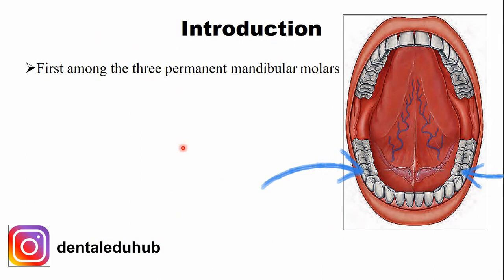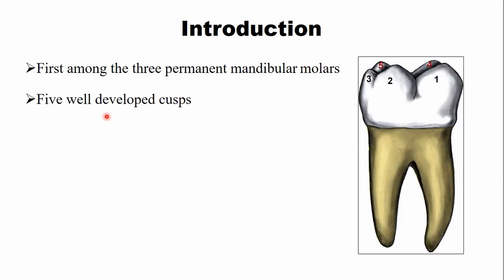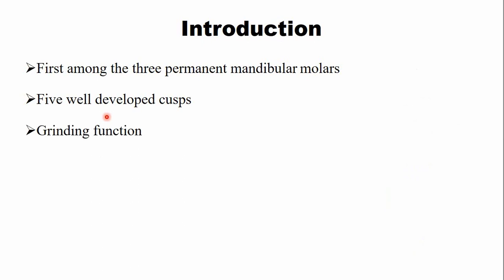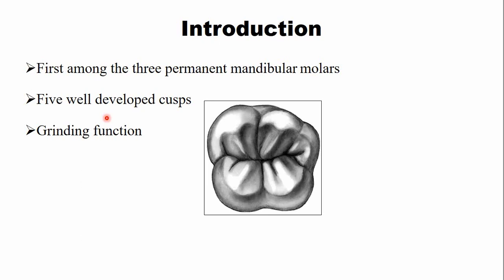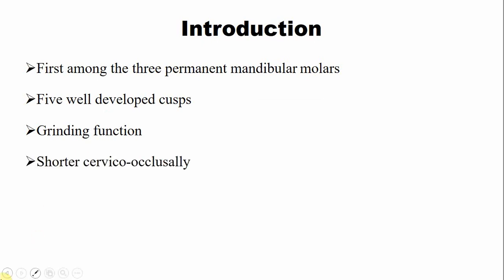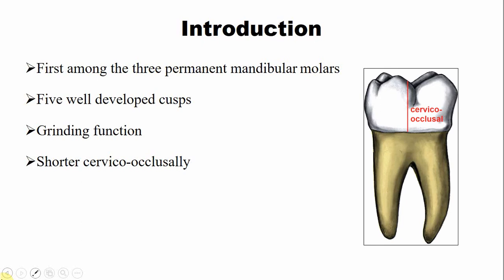The permanent mandibular first molar is the first tooth among the three permanent mandibular molars — first both in sequence and as the first mandibular molar to emerge into the oral cavity. This tooth has five well-developed cusps and has a primary grinding function due to its large occlusal table. The crown is shorter cervico-occlusally compared to the anterior teeth such as premolars and incisors, which have a larger cervico-occlusal dimension.